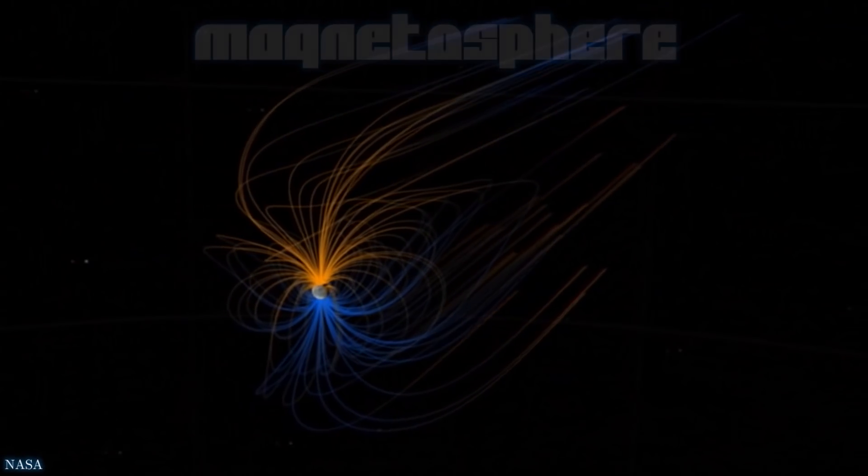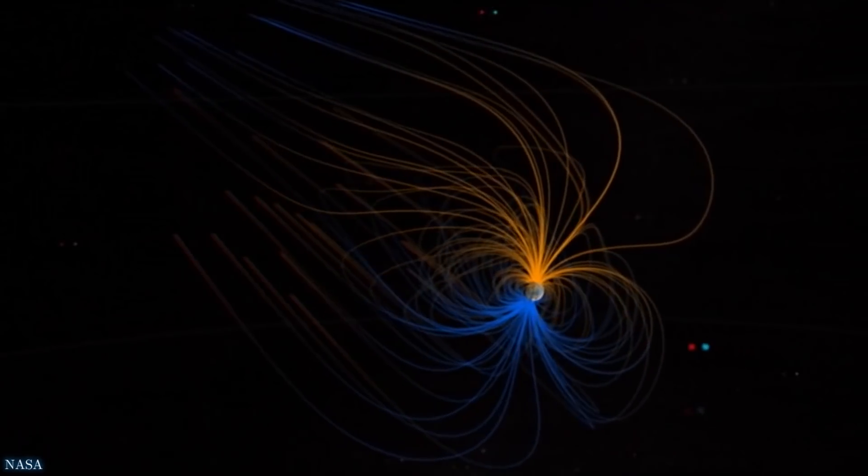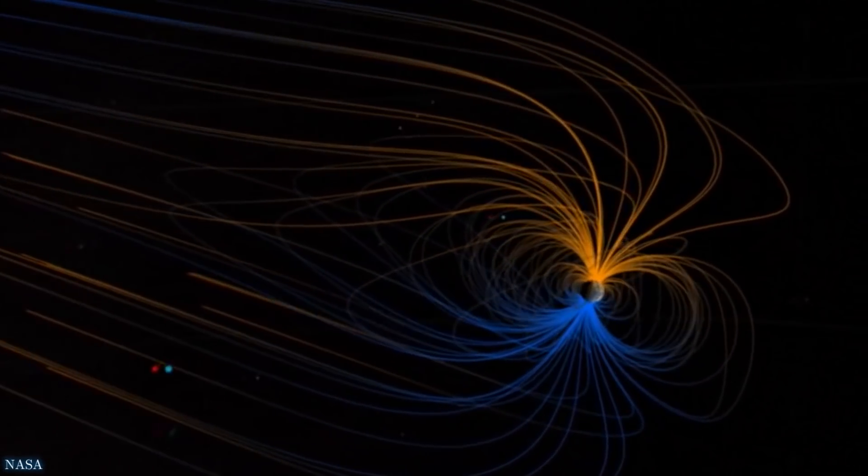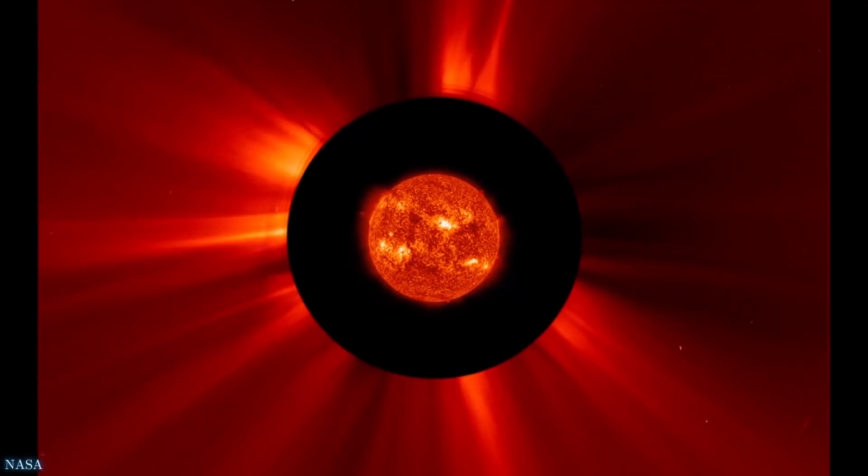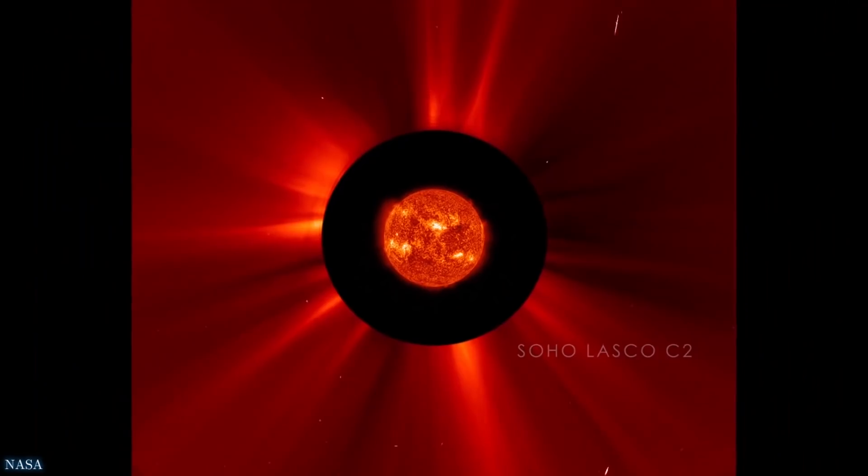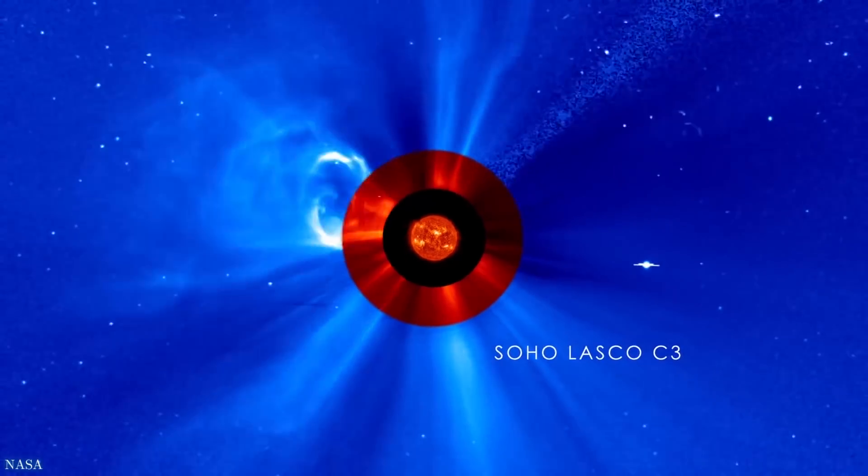This is the region of space around the Earth that is dominated by Earth's magnetic field and is shaped by its interaction with the solar wind, carving out a magnetic bubble that we live in that protects us from many of the sources of space radiation.